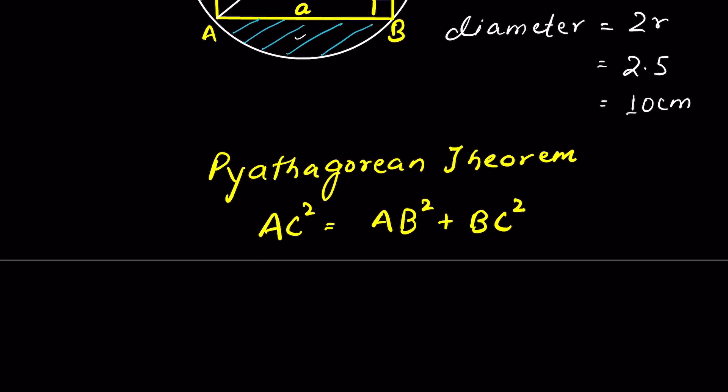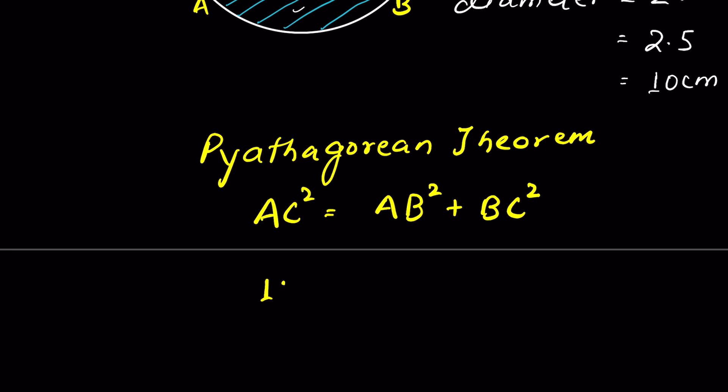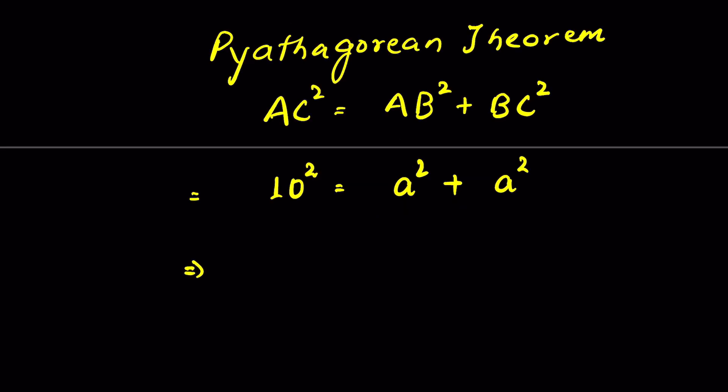AC square, that is here, 10 cm. So it will be 10 square. AB square is a square and BC square is also a square.